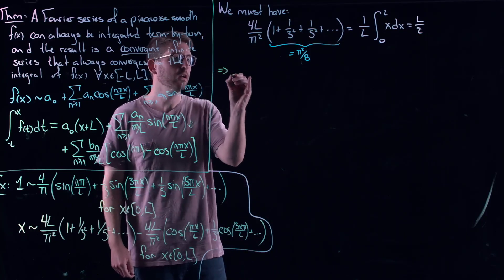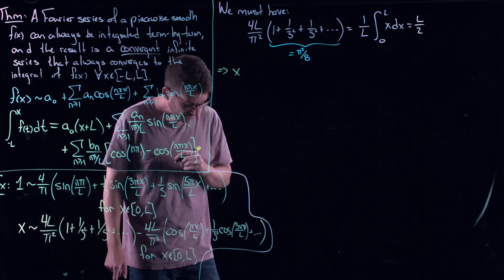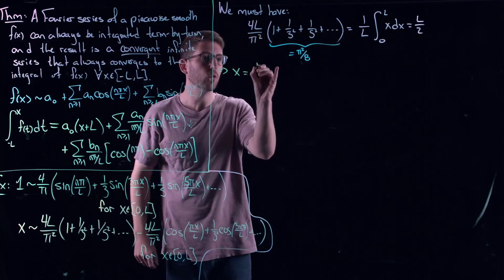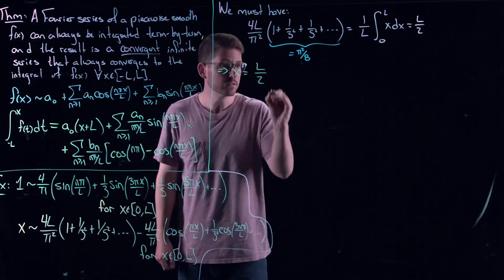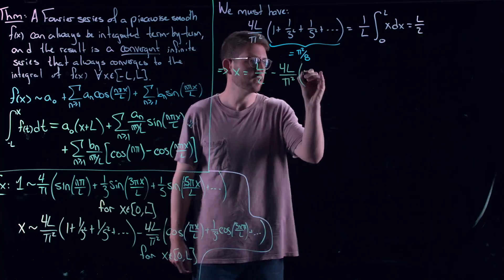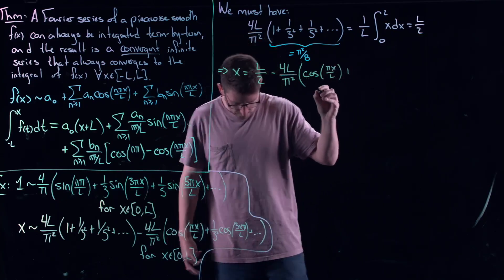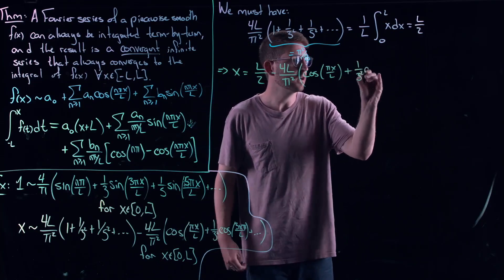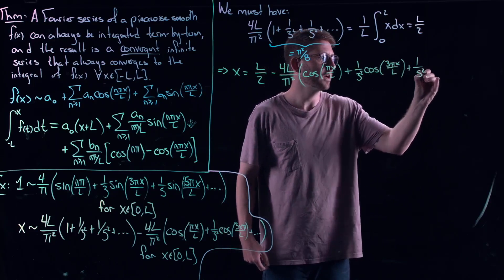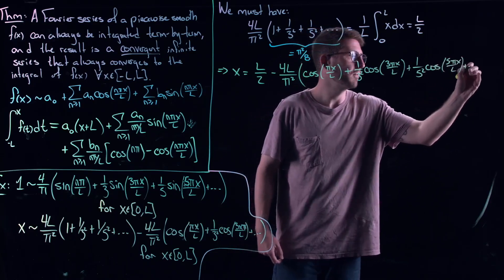Essentially what this tells me is that x, once I simplify this from the infinite summation, is equal to l over 2, with equality, and then minus 4l over pi squared times the cosine series: cos of pi x over l plus 1 over 3 squared times cos of 3 pi x over l plus 1 over 5 squared times cos of 5 pi x over l, and so on.